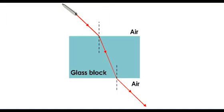The angle of incidence, I, is the angle between the normal and the incident ray. The angle of refraction, R, is the angle between the normal and the refracted ray.